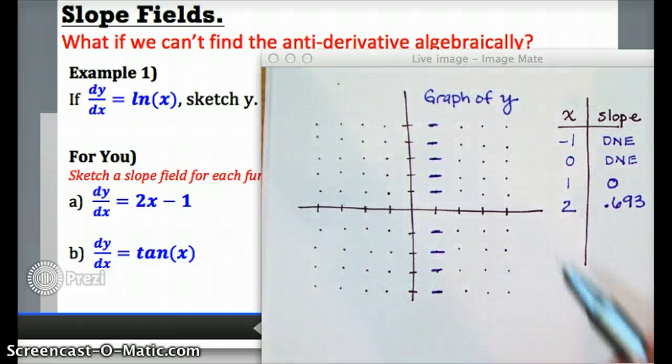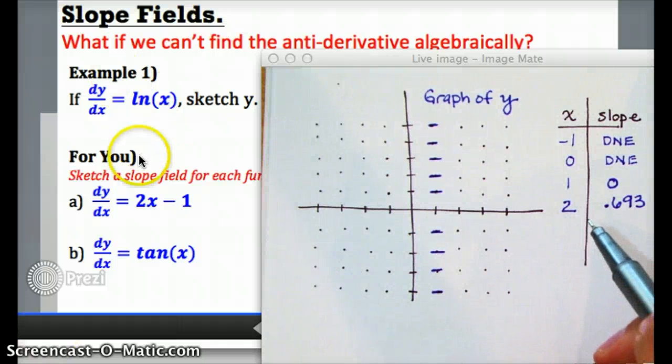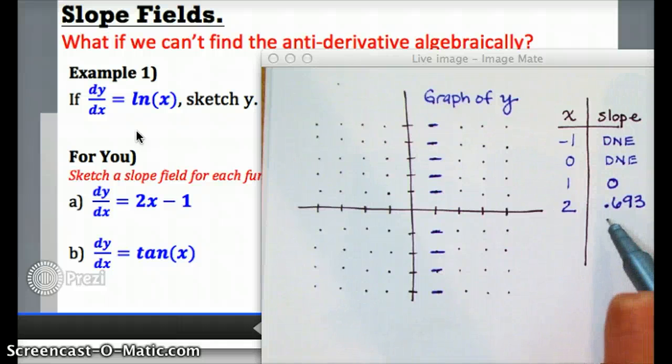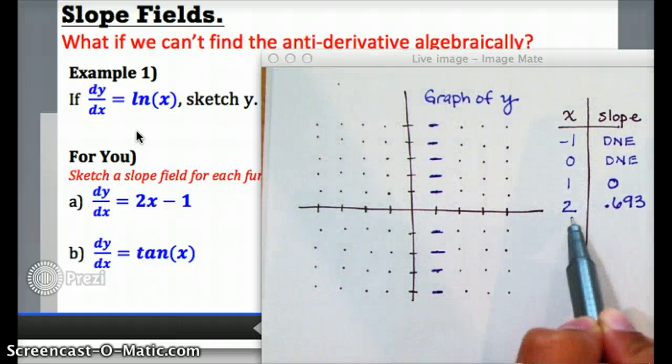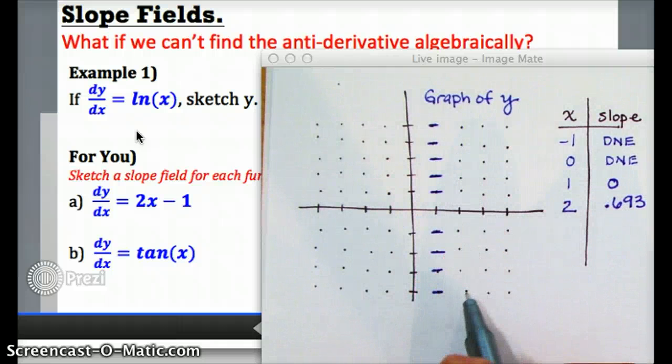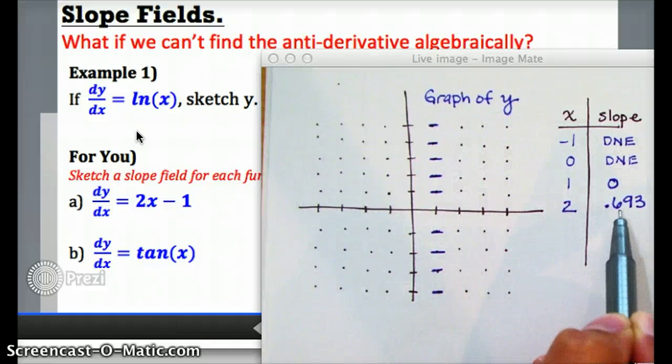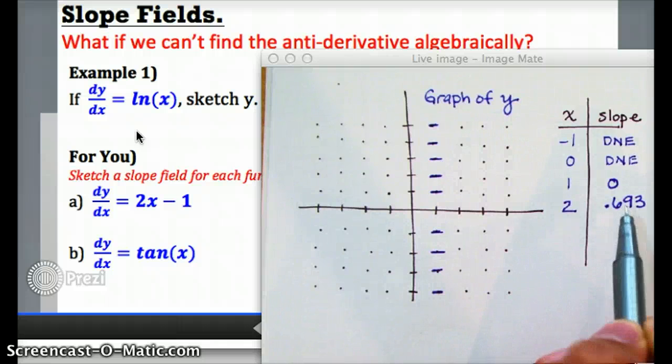When I plug in 2 to the ln function, which will tell me the slope, I get 0.693, which is going to be a slope less than 1 but bigger than 0. So now any point on this grid that has an x value of 2, for example, all the points up and down this row, I'm going to sketch a little tangent line, and it's going to have a slightly positive slope.